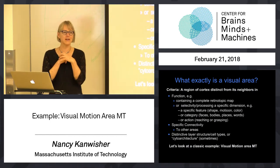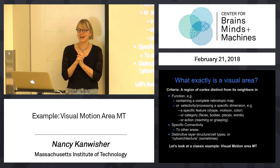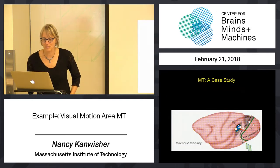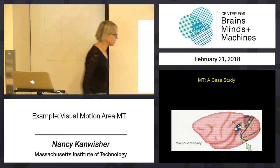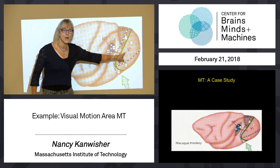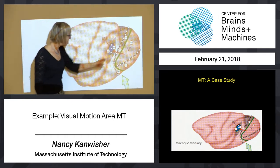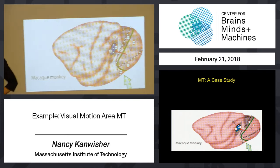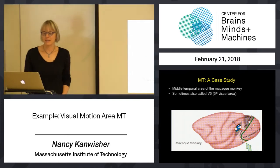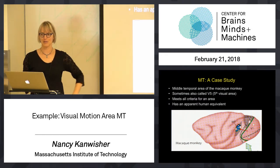Let's look at one of the most classic, lovely, undisputed visual areas in the visual system. This is the visual motion area MT. Here is MT in a macaque monkey, side view — that little blue thing right there. V1 in the monkey sticks way out on the lateral surface, very convenient if you want to record from it. There is visual area MT, and it goes by lots of other names. It meets all the criteria for a visual area — it is a parade case of a visual area.